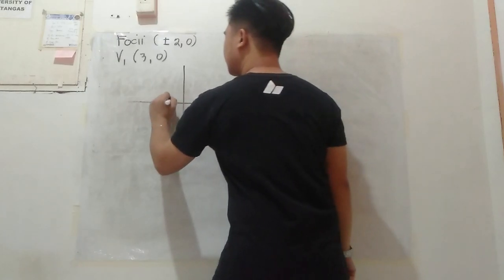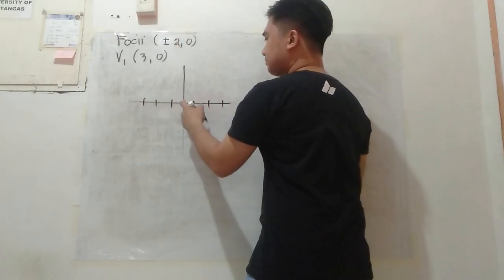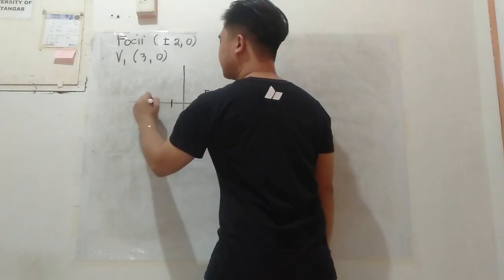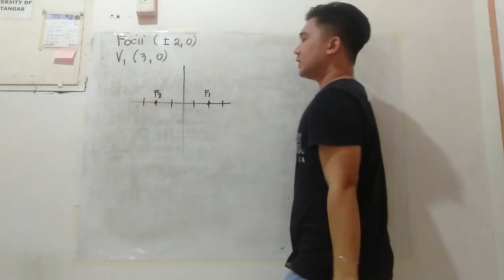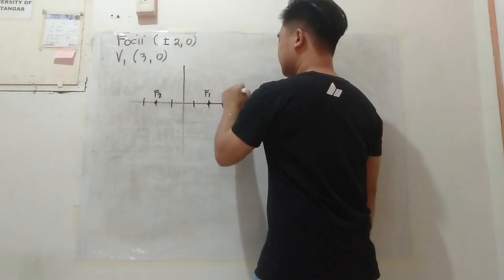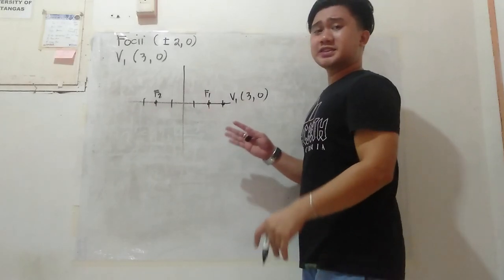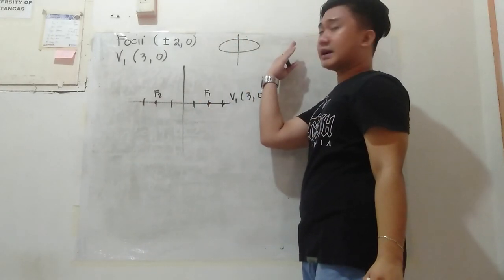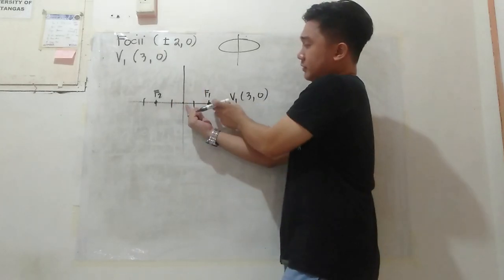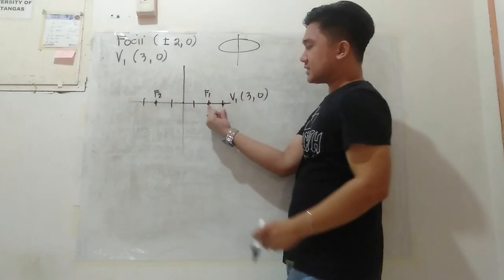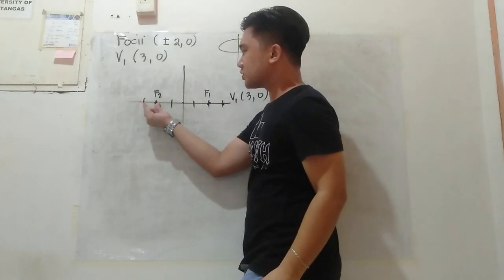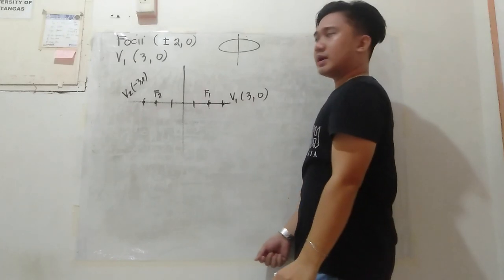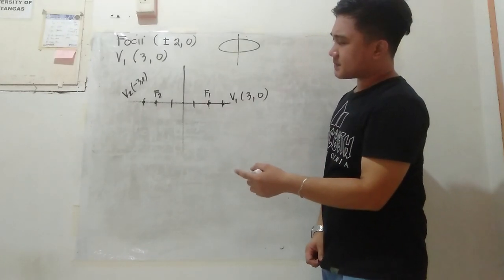Let's draw it. Foci: F1 at (2, 0) and F2 at (−2, 0). One vertex is at (3, 0). Since the ellipse is symmetric, the other vertex is at (−3, 0). The distance from one focus to the nearest vertex is 1 unit, confirming symmetry. So vertex 1 is at (3, 0) and vertex 2 is at (−3, 0).